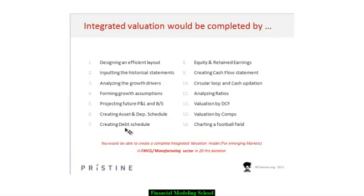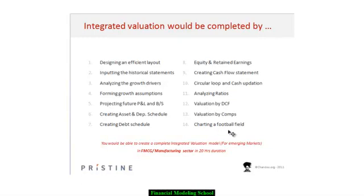We build the debt schedule that again cuts across the P&L and balance sheet — for example, debt sits in the balance sheet while interest sits in the profit and loss account. We build the equity and retained earnings schedule, where retained earnings flow from the P&L to the balance sheet. Then we construct the cash flow statement, address the circular loop in it, and analyze the model using ratios. Finally, we build the discounted cash flow and valuation using comparatives.